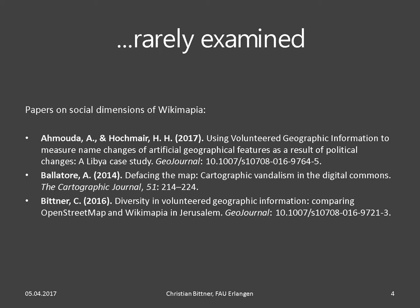To the best of my knowledge, there are at this time only three papers that deal directly with social aspects of Wikimapia: a very fresh publication by Ahmed Mahmoud and Hartwig Hochmair on how place-name changes in Libya are reflected in VGI; a paper by Andrea Ballatore on forms of cartographic vandalism; and my own paper on differences between OSM and Wikimapia in Jerusalem.